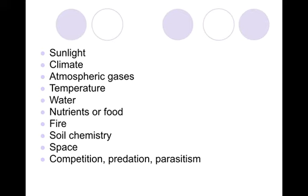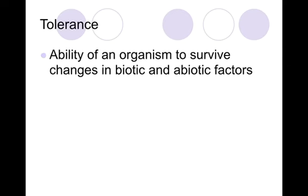They're going to limit the number of organisms, where they're at, the reproduction ability, and things like that. Tolerance — when we took a look at our salt water tank, we had some limiting factors in there and, depending on what those limiting factors were and what their readings were, some organisms could tolerate changes in those pH and ammonia levels and those kind of things that others could not.